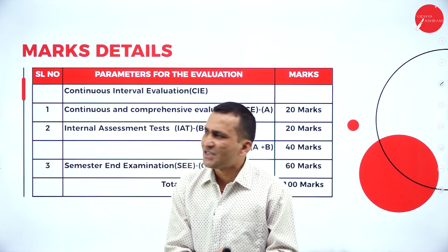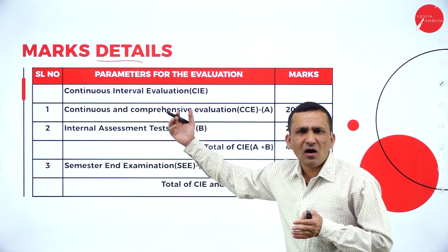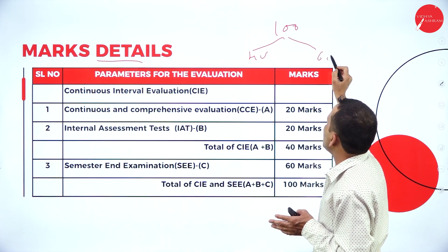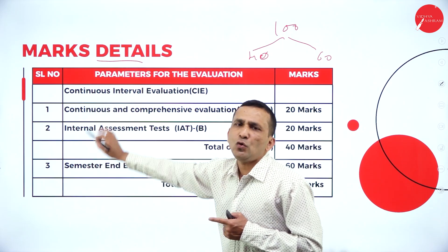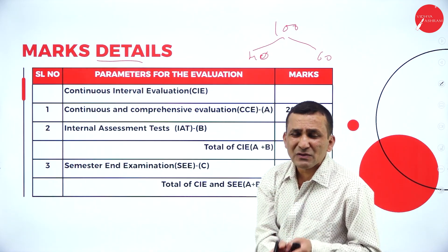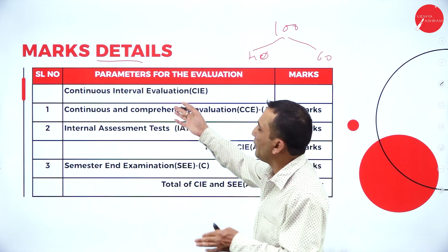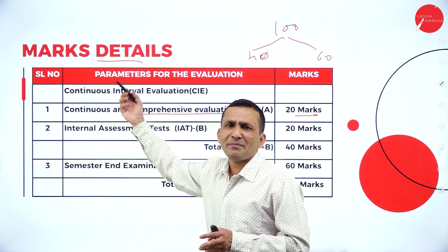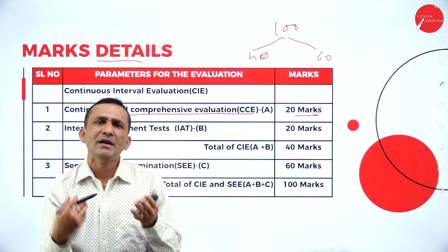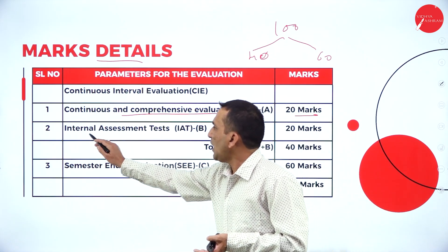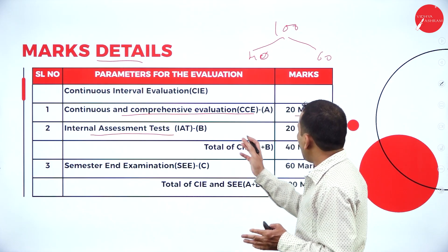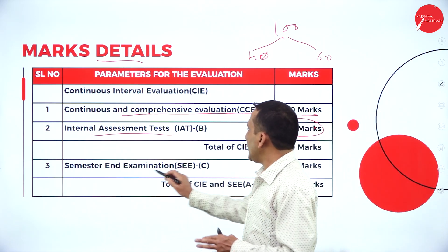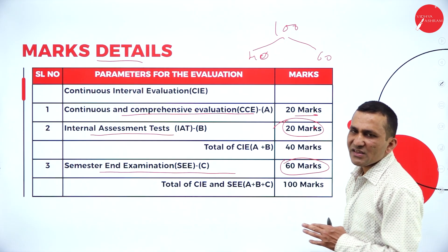Regarding the marks detail: the total paper is set for 100 marks. Internal assessment is 40 marks and the external paper is 60 marks. For the internal 40 marks, there are two major components: continuous and comprehensive evaluation for 20 marks — which can include presentations, group discussions, skill development, or assignment submissions. The institution conducts two or three internal assessments, and the best two are considered for 20 marks, with 30 marks each internal, scaled down to 20. The university conducts the semester examination for 60 marks.